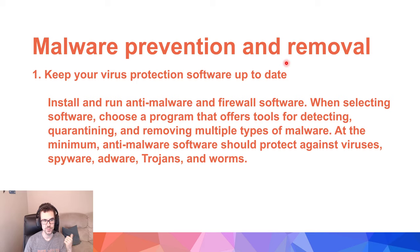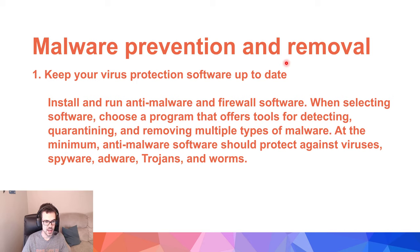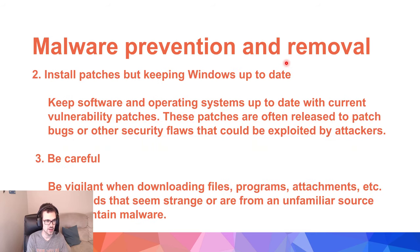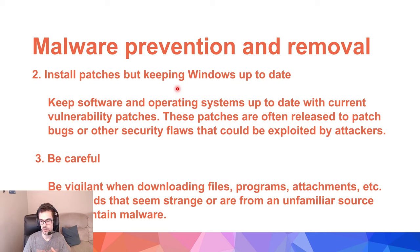For malware prevention and removal: keep your virus protection software up to date, and install anti-malware and firewall software. When selecting software, choose a program that offers tools for deleting, quarantining, or removing multiple types of malware — at a minimum it should protect against viruses, spyware, adware, Trojans, worms, and ransomware. Also keep Windows up to date — Windows 10 releases security patches literally every week, sometimes even sooner. Be careful and vigilant when downloading programs, files, or attachments from unfamiliar or unknown sources.